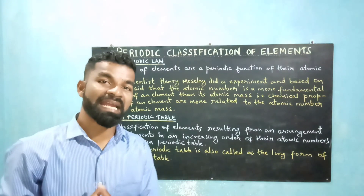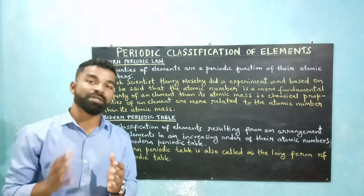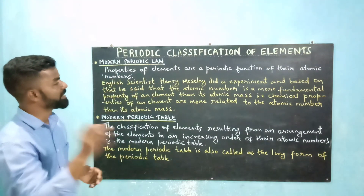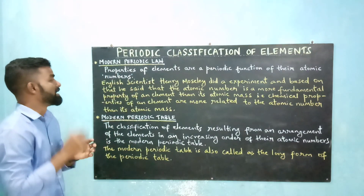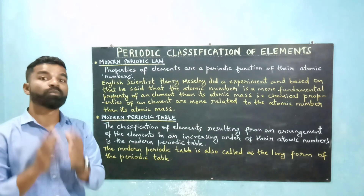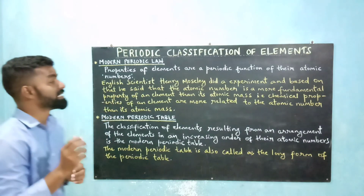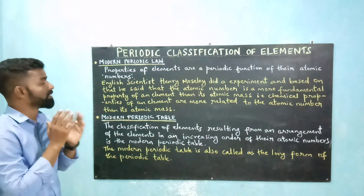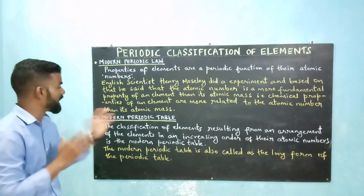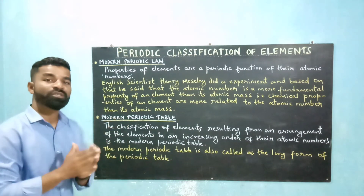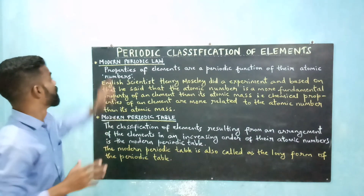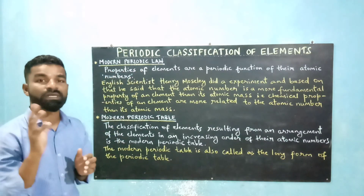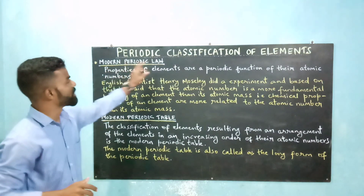Earlier, Mendeleev had stated that the properties of the elements are a periodic function of their atomic masses. But English scientist Henry Moseley did an experiment and based on that, he said that the atomic number is a more fundamental property of an element than its atomic mass. That is, chemical properties of an element are more related to the atomic number than its atomic mass. And based on that, he stated the law: properties of elements are a periodic function of their atomic numbers. This was named as the modern periodic law.